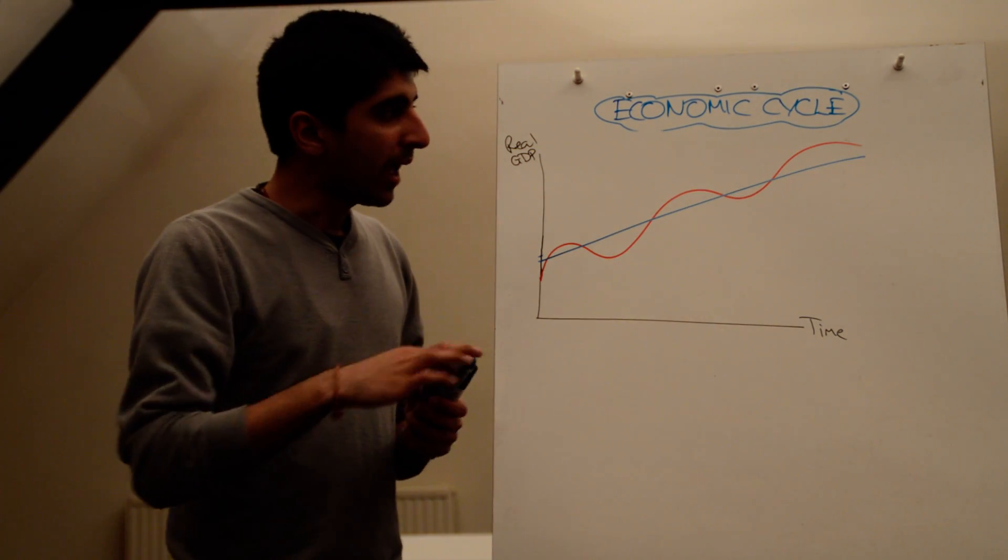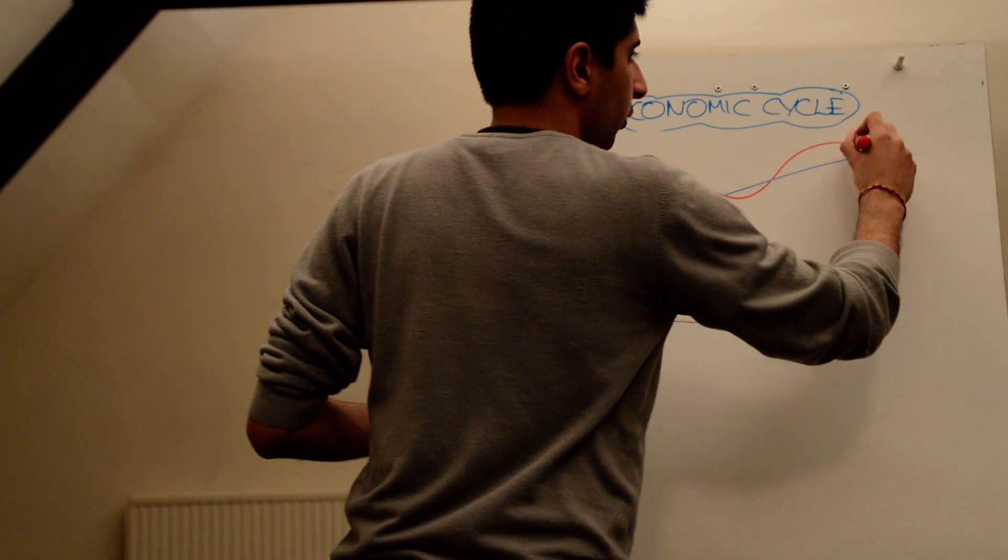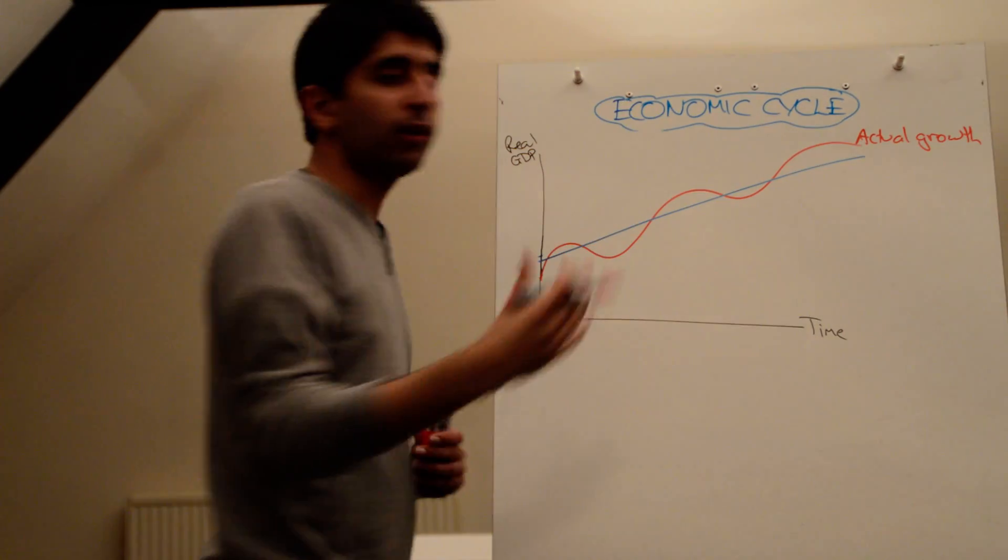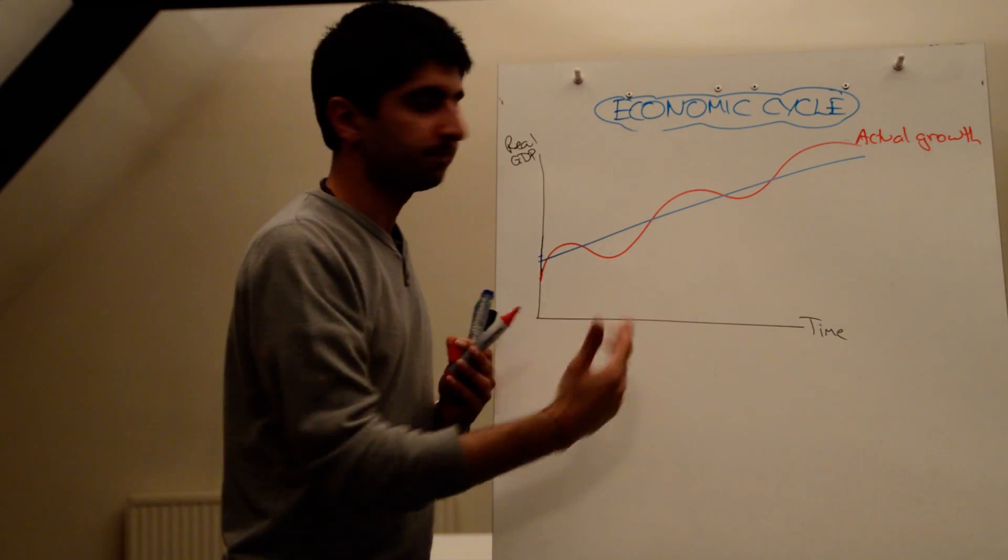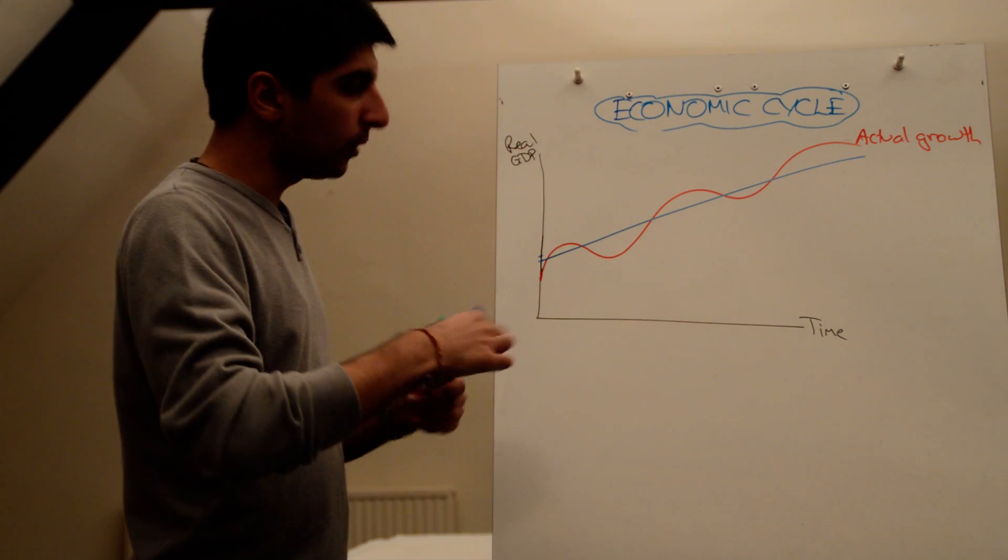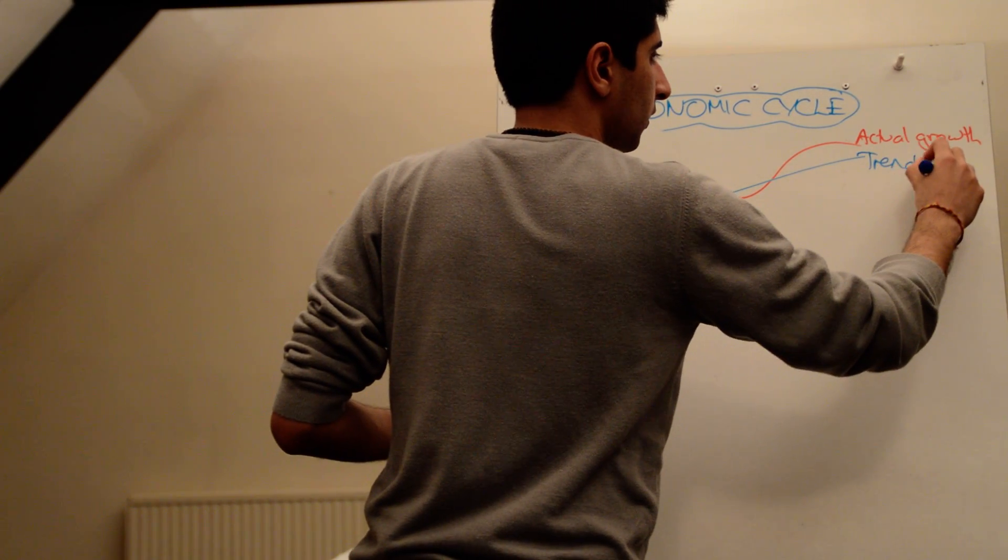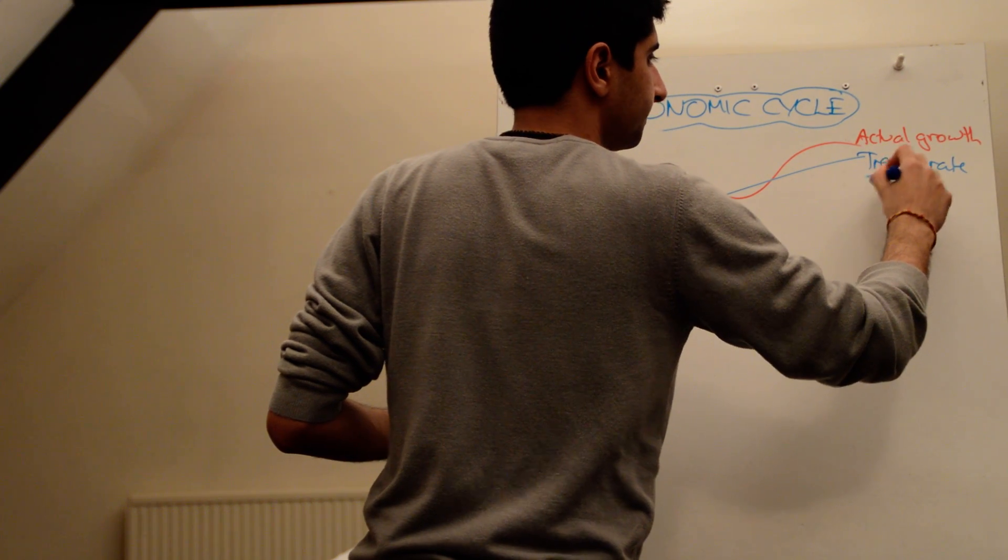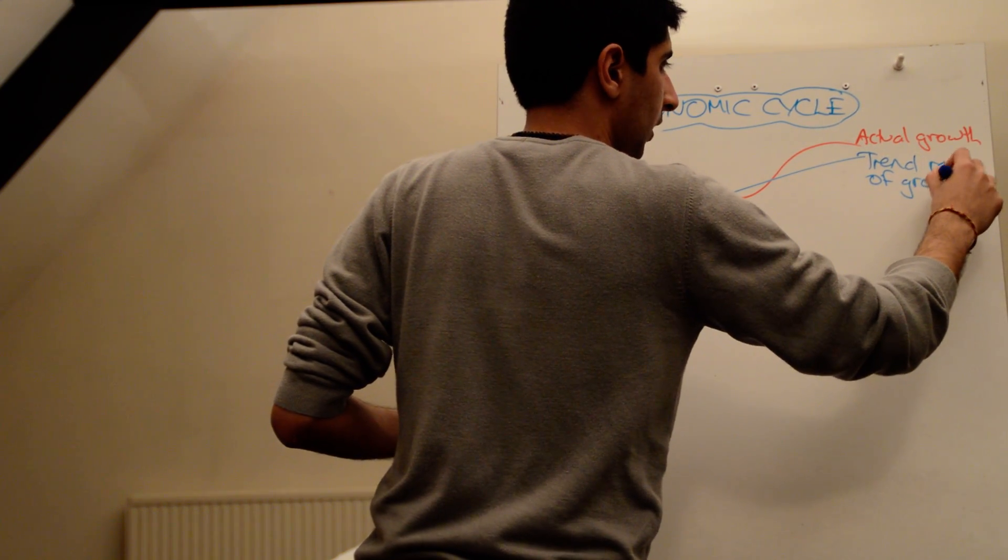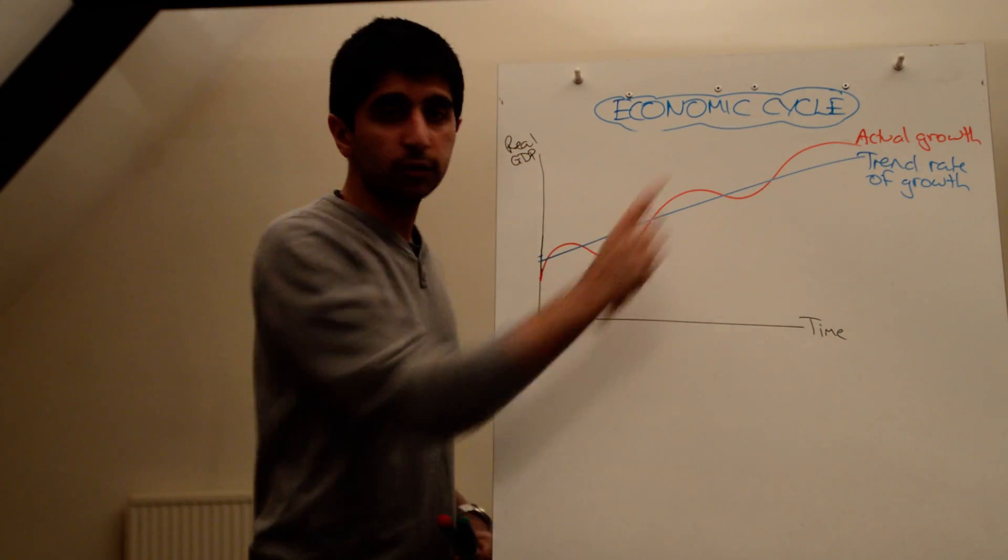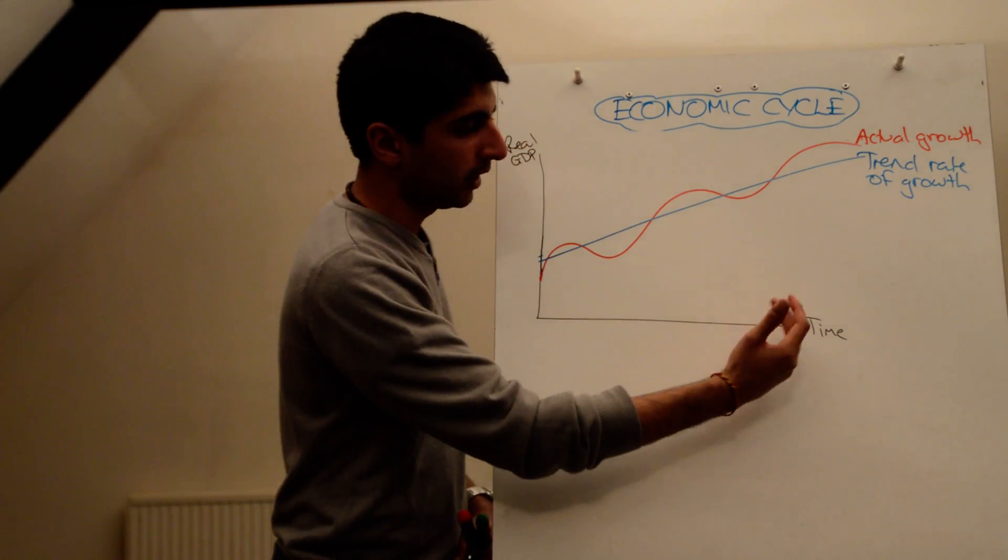So in red, we have actual growth in the economy, basically the level of aggregate demand over time. And the blue line gives us trend growth. And all the blue line is, it's a measure of the average of actual growth over a given period of time.